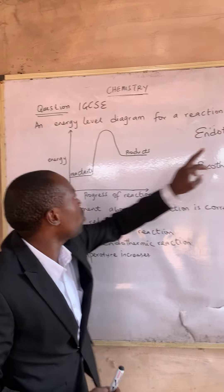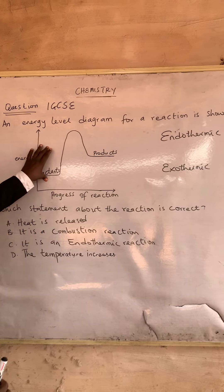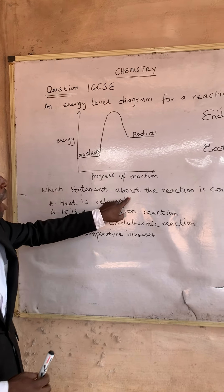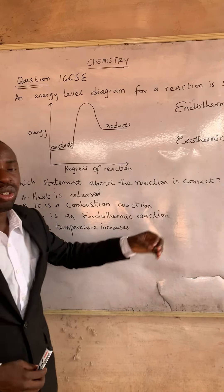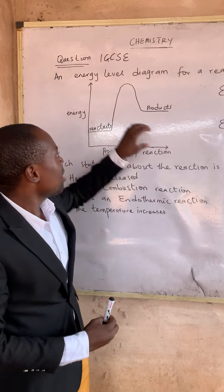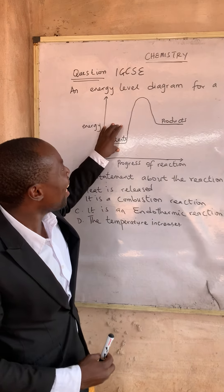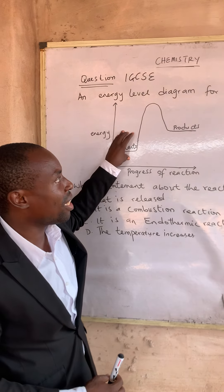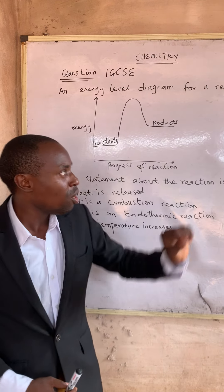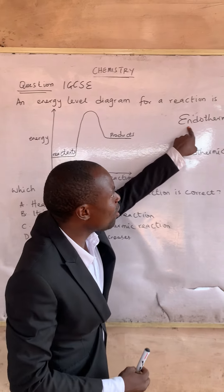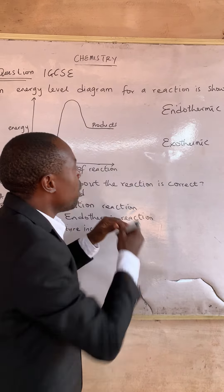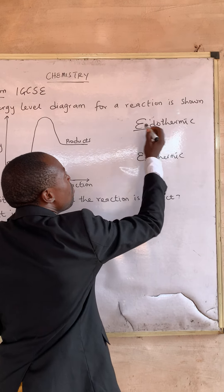A reaction is shown, and the question asks which statement about the reaction is correct. We should understand that this is an energy profile diagram, which is of two categories: we have the endothermic and we have the exothermic.